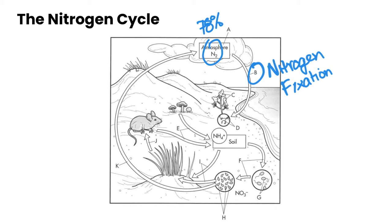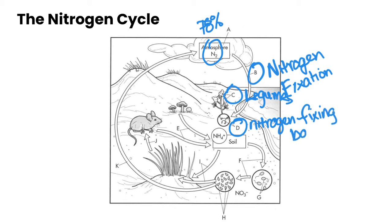Nitrogen fixation is mostly done by legumes — label C — which are plants like peas, soybeans, clover, and alfalfa. In their roots, they have what's known as nitrogen-fixing bacteria. These bacteria are able to take nitrogen from the atmosphere and convert it into ammonia, which can then be taken up by some plants. Nitrogen can also be fixed in the soil by other free-living bacteria, so not all of it takes place at the roots of these plants — sometimes it takes place in the soil as well.